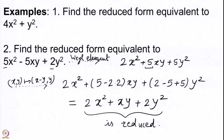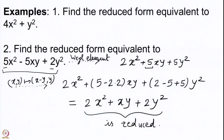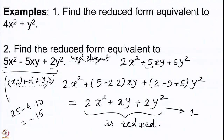As a check, we verify the discriminant is preserved. For the original form 5x² − 5xy + 2y², the discriminant is b² − 4ac = 25 − 4×5×2 = 25 − 40 = −15. For the reduced form 2x² + xy + 2y², the discriminant is 1 − 4×2×2 = 1 − 16 = −15. The discriminants match, confirming our calculations are correct. We have computed reduced forms for both positive definite forms.